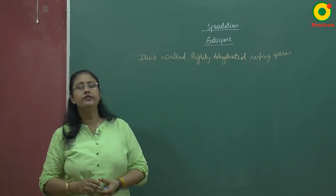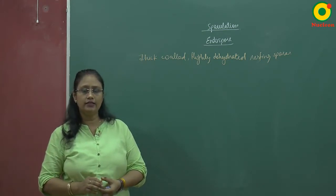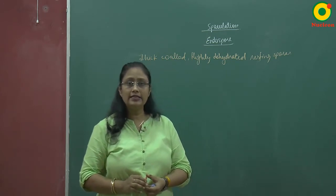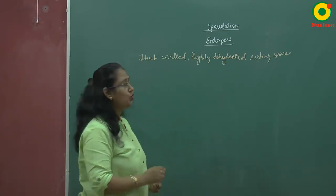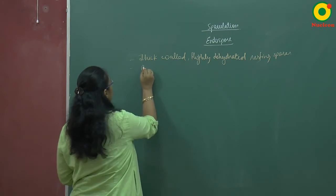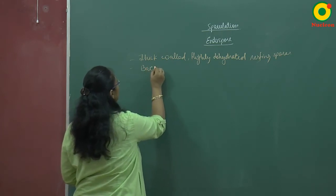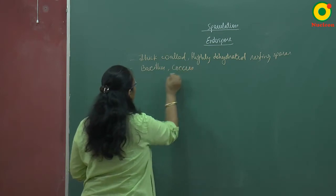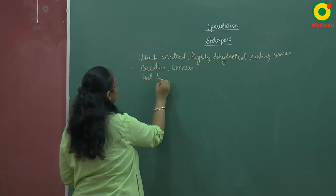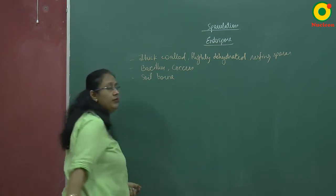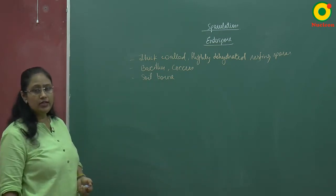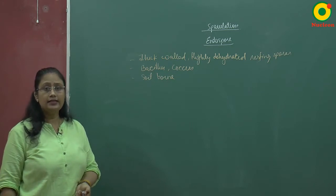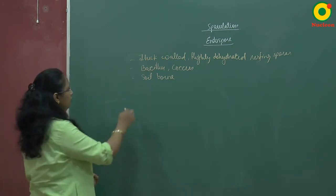They are generally found in bacillus and coccus bacteria — mainly they are soil-borne spores. Endospores are strictly restricted to large-sized gram-positive bacteria, with few exceptions.